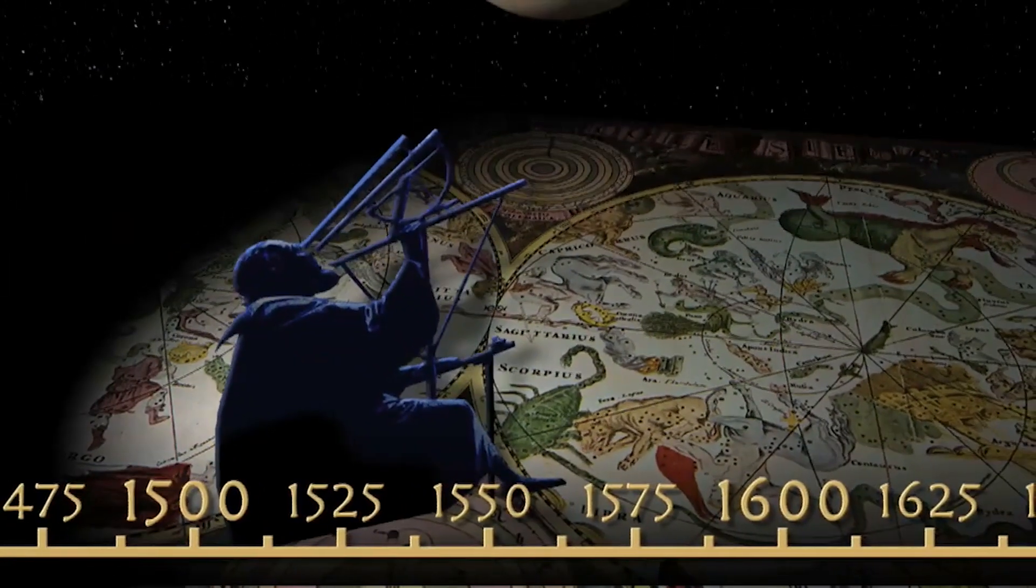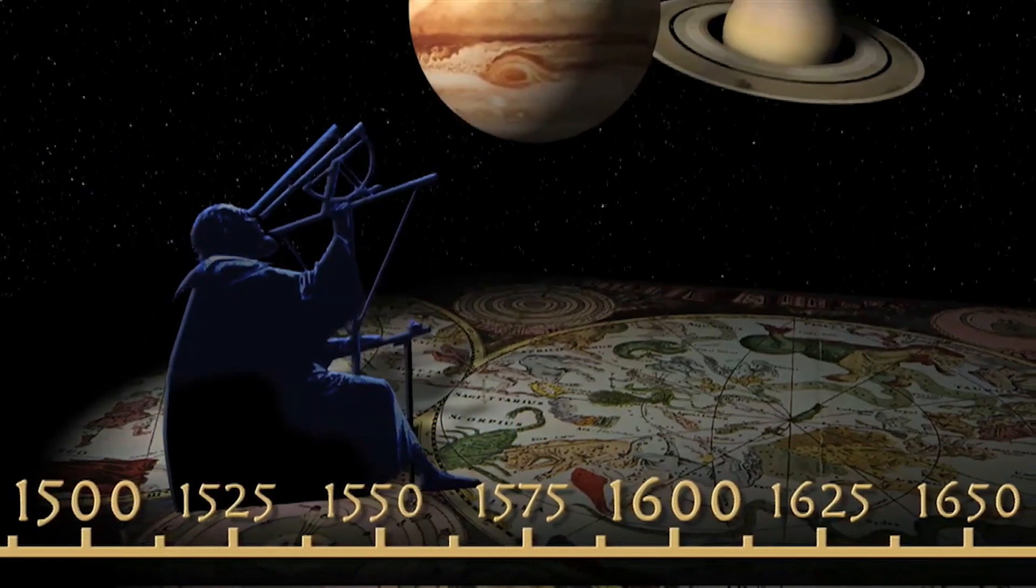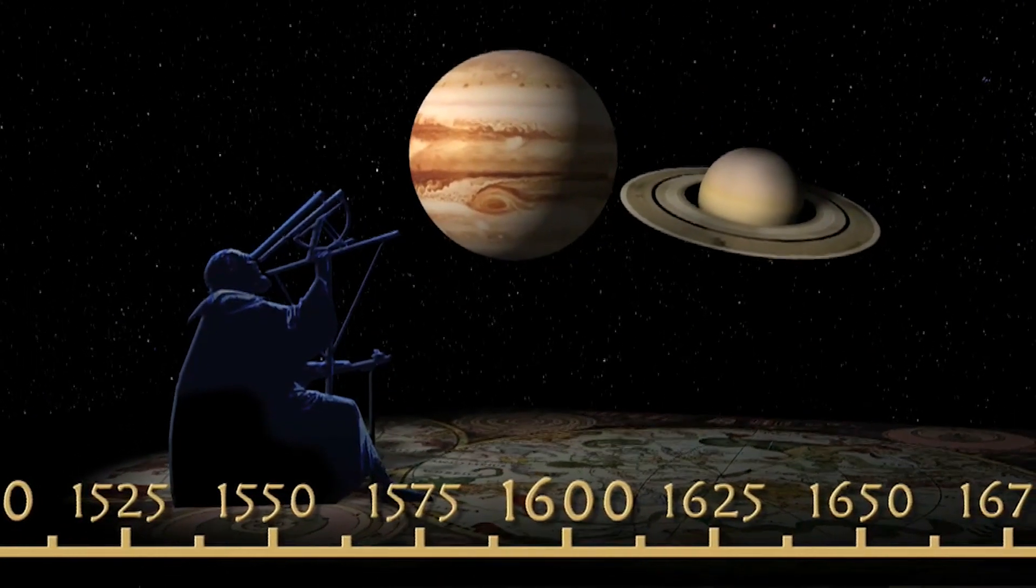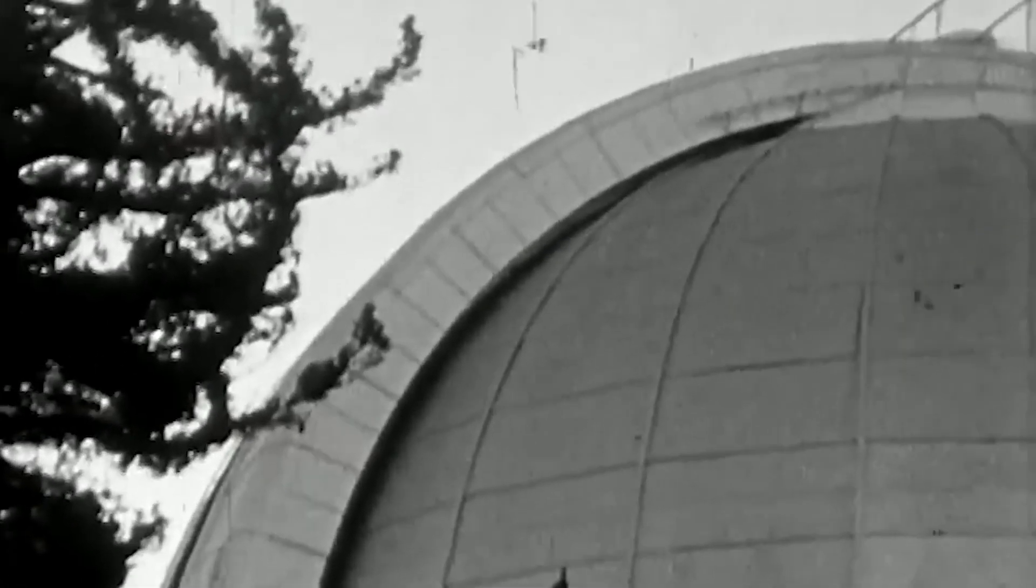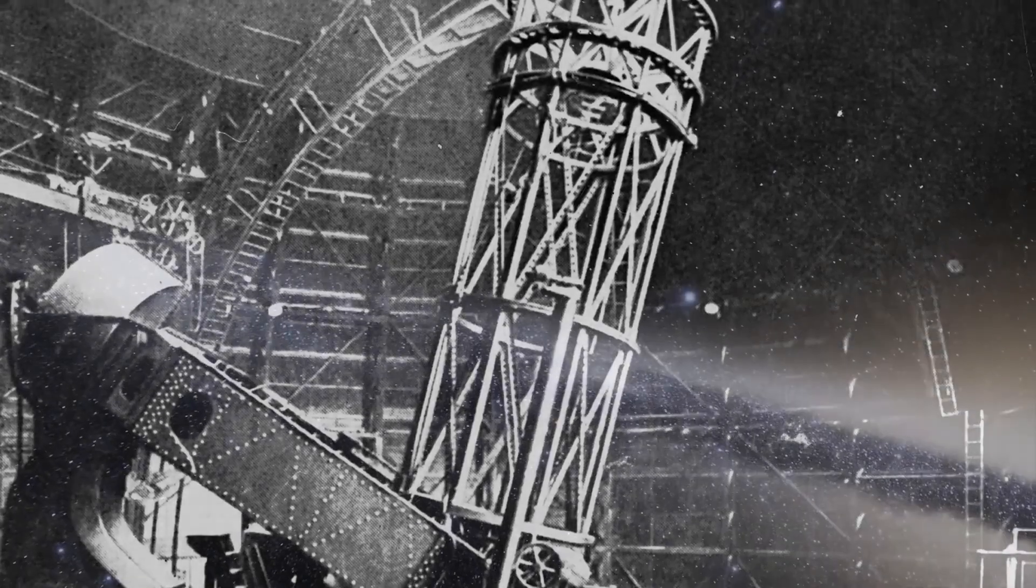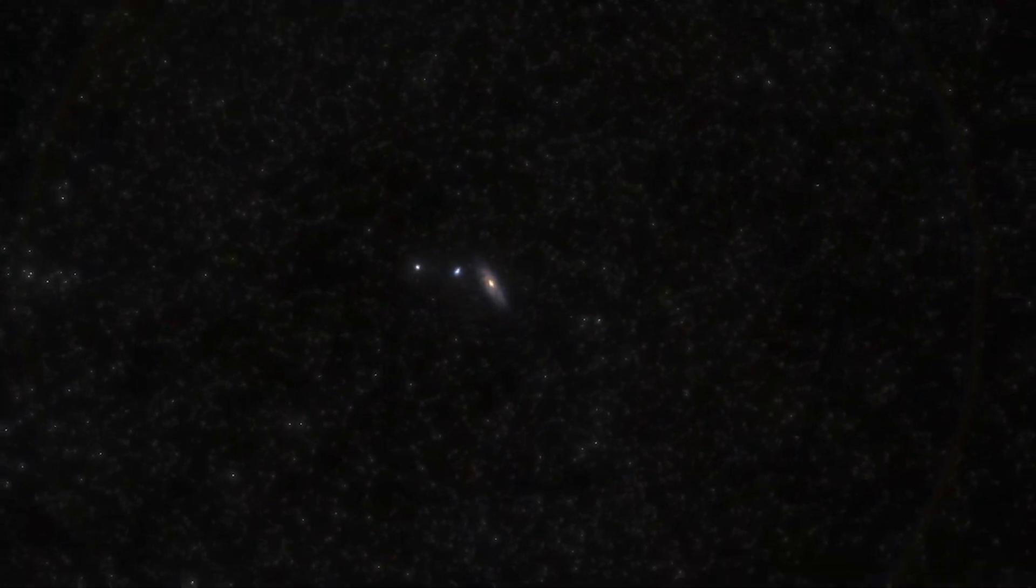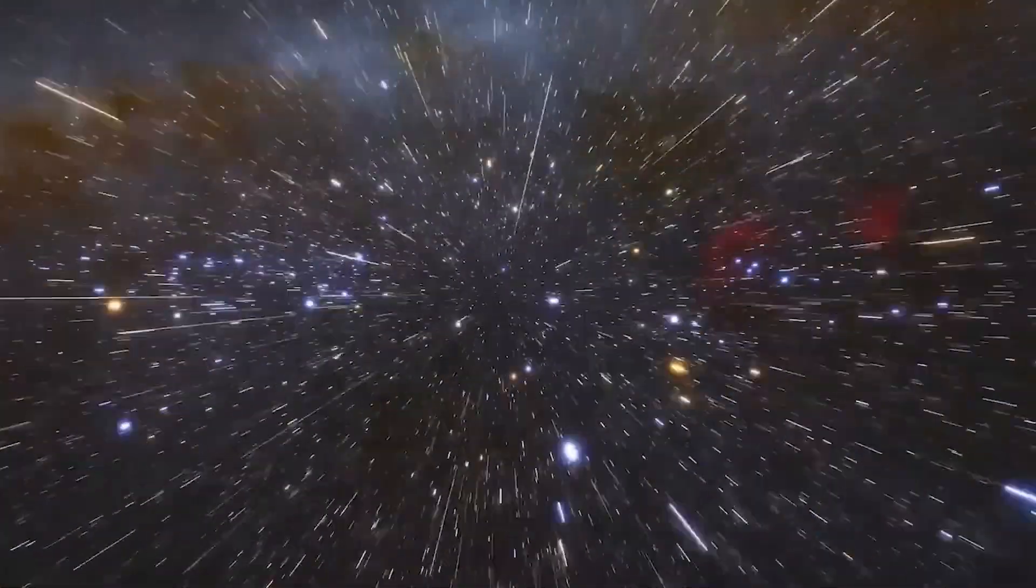This discovery dates back to the 17th century, when Galileo Galilei was a pioneer in revealing the true nature of the Milky Way, showing that it was composed of countless stars. However, it was in the 1920s that Edwin Hubble, using the Hooker telescope, discovered galaxies beyond the Milky Way, including Andromeda, marking a milestone in our understanding of the cosmos. This finding demonstrated that the universe was much vaster than previously believed, challenging our conceptions of humanity's place in the universe.